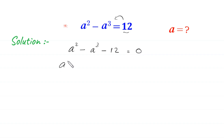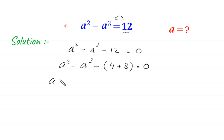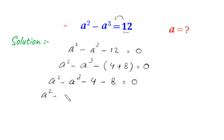Next, a squared minus a cubed minus 12 — this 12 can be written as 4 plus 8, so we get negative 4 minus 8. Then, this negative 4 is the same as negative 2 squared, and this negative 8 is the same as negative 2 cubed, giving us a squared minus a cubed minus 2 squared minus 2 cubed is equal to 0.